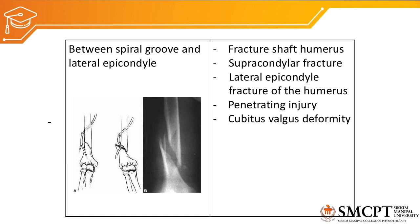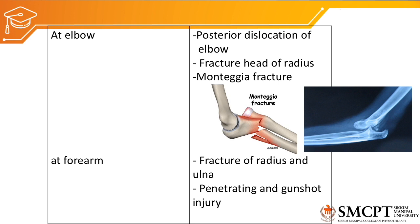Between the spiral groove and lateral epicondyle, causes include fracture of the shaft of humerus, supracondylar fracture, lateral epicondyle fracture, penetrating injuries, and cubital valgus deformity. At the elbow area, posterior dislocation of the elbow is the common cause, along with fracture of the head of radius and Monteggia fractures. At the forearm, fractures of radius and ulna or penetrating injuries are the causes.